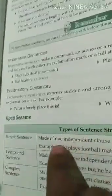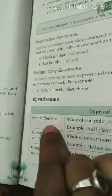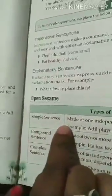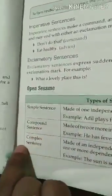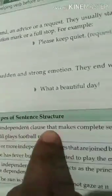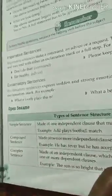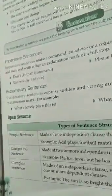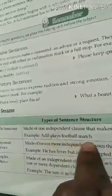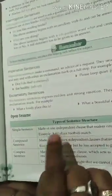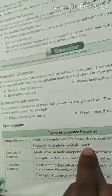Now, on the basis of structure, there are three kinds of sentences: simple sentence, compound sentence, and complex sentence. A simple sentence is made of one independent clause that makes complete sense with only one finite verb. For example, 'Adil plays football match' — 'plays' is the only finite verb, so it is a simple sentence.